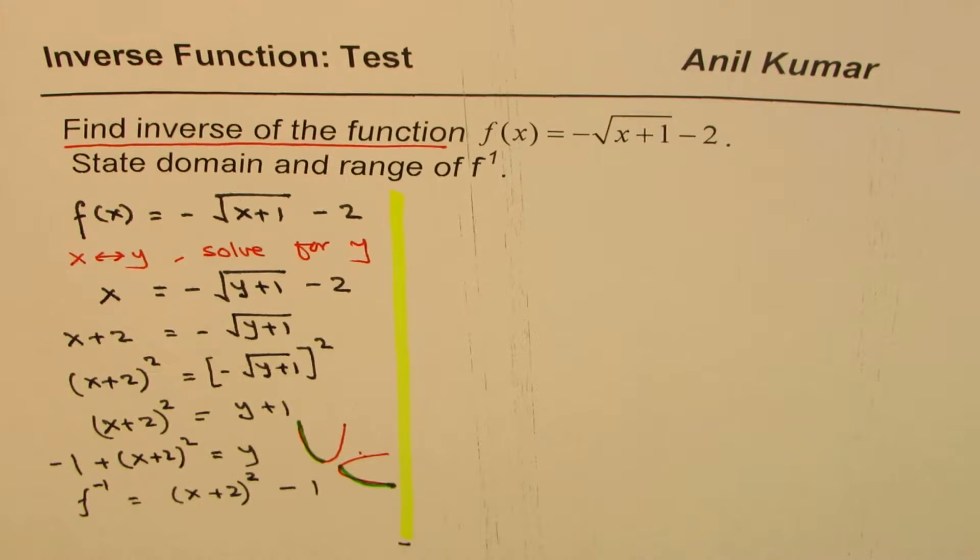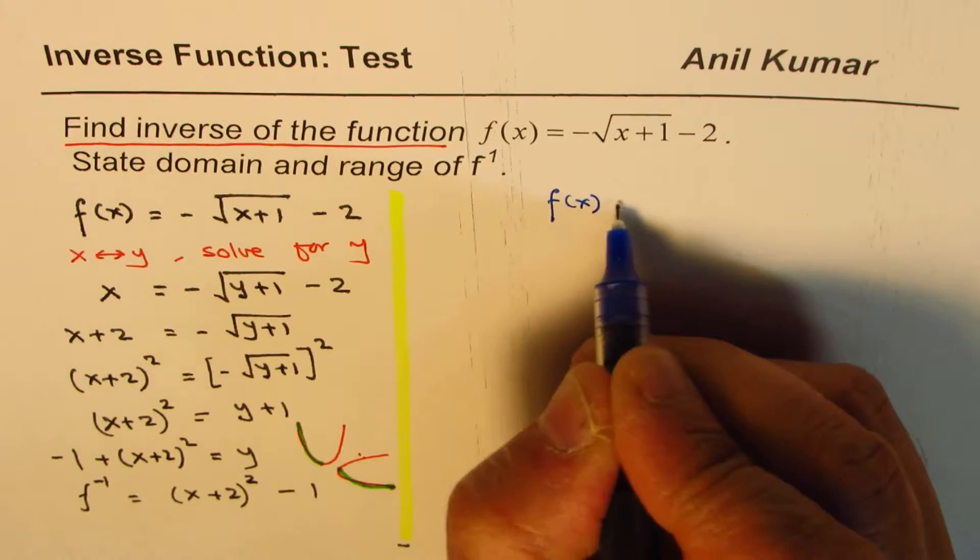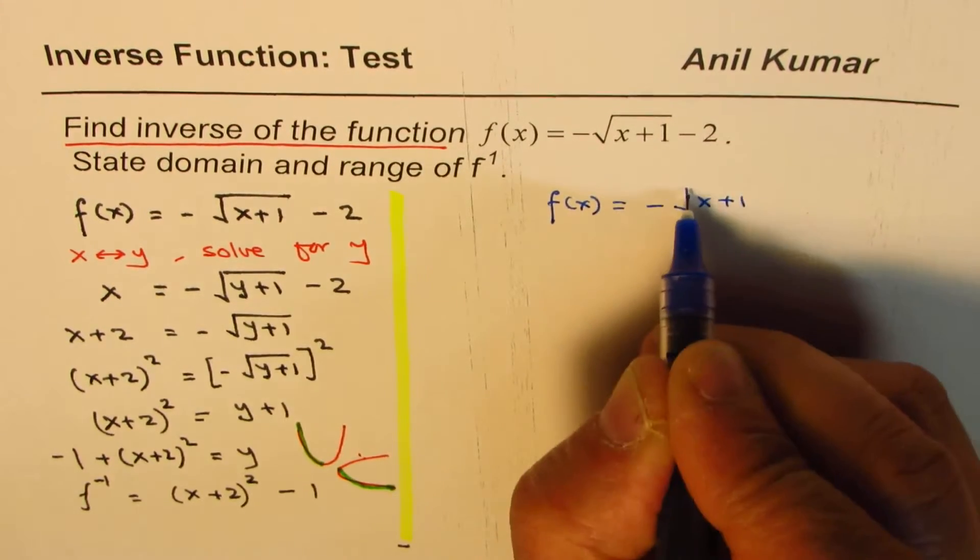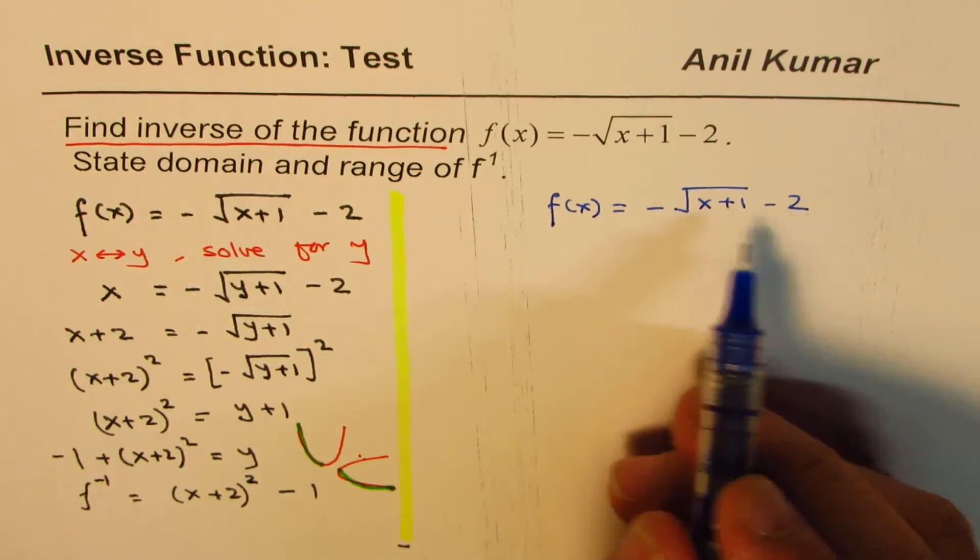So how do we correct it? This is very, very important to understand. And now in this video, let us understand that part. Let us analyze the function itself. The function is f(x) equals to minus square root of x plus 1 minus 2. Now, what is the domain and range of this function?